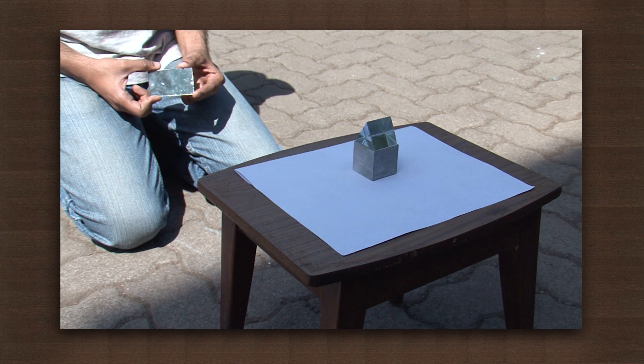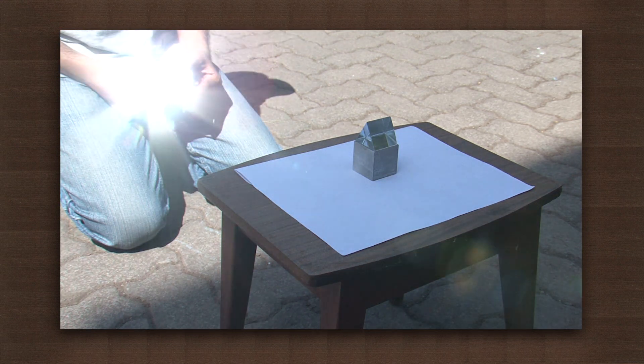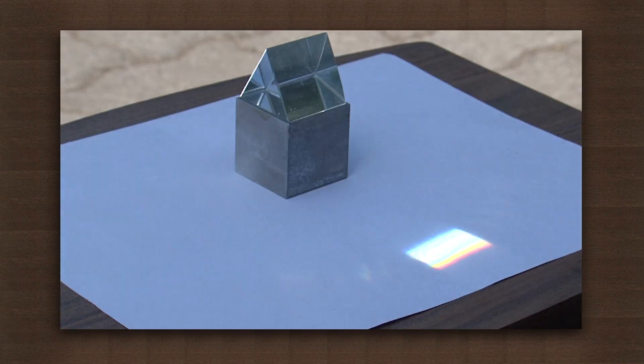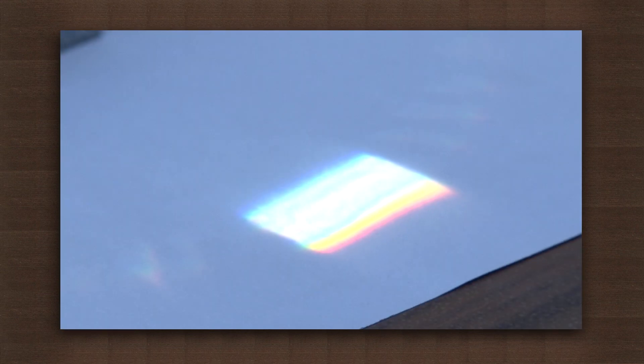You might have to try a few adjustments to get the right angle. Hold the plain paper on the opposite side of the prism to catch the spectrum of colors.